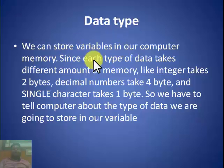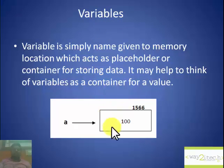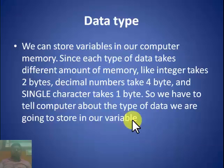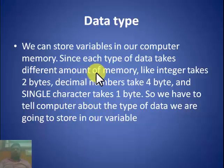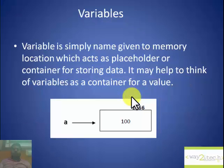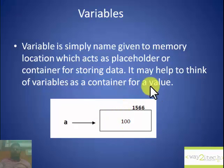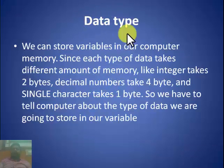Variables will be stored in computer memory. Since each type of data takes a different amount of memory — for example, an integer takes generally 2 bytes, a decimal number takes 4 bytes, a single character takes 1 byte — we need to define the size of our container and what type of data our variable will store. This is determined by the data type.